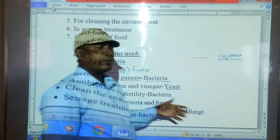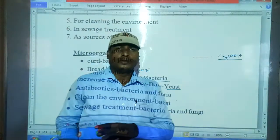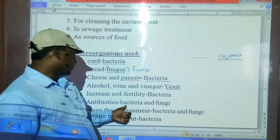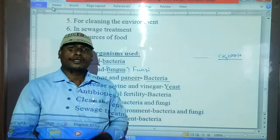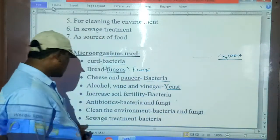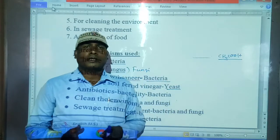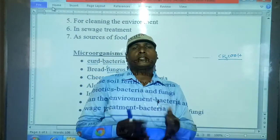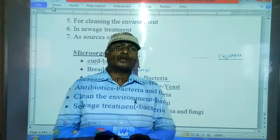Clearing the environment is done by bacteria and fungi — dead animals and other things are decomposed by bacteria and fungi and mixed with the soil. Sewage treatment is also helped by certain microorganisms. Different microorganisms are there which are helping in our daily life to make different things like food items such as curd and also in sewage treatment and different fields.